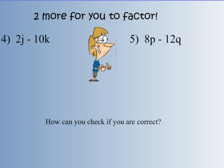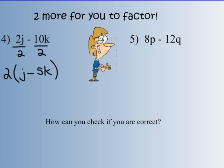Two more of these — hopefully you're copying these. 2j and negative 10k have a 2 in common. So 2j divided by 2 gives me 1j, and negative 10 divided by 2 gives me negative 5k. Put parentheses around it and put the common factor out front. So 2 times the quantity j minus 5k is the factored form of 2j minus 10k.